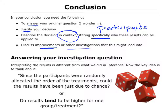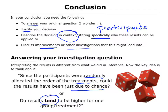One of the things we need to think about when we interpret this is: because we randomly allocated the participants to the treatments, could the results that we have seen just be due to chance? Is it just random that we've got these results? Could that difference in medians just be a random probability? Or do we have enough evidence to say that the results tend to be higher for one of the groups?